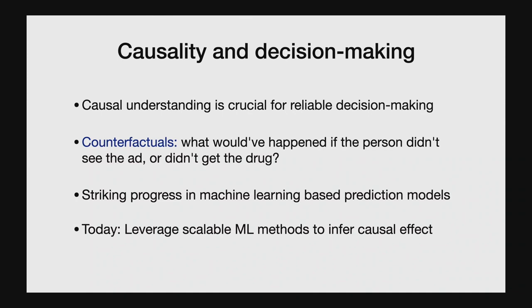For us to make decisions that are reliable and effective, we need to base them on causal relationships rather than spurious correlations. In the backdrop of this classical topic of causality, we've seen striking advances in large-scale prediction methods recently, and they've certainly been driving progress in a range of different fields.